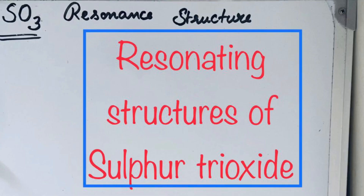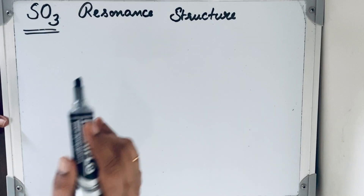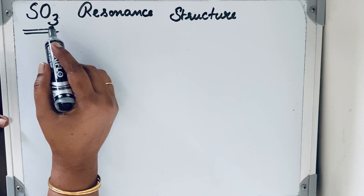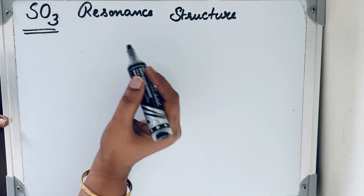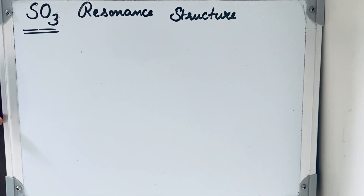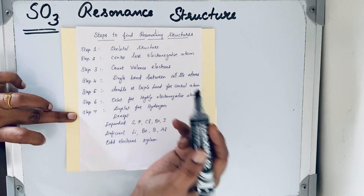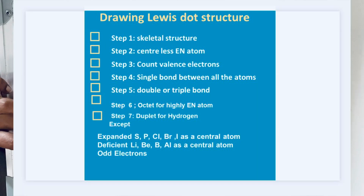Welcome to Aurora Chemistry for Everyone. Let us see how to write resonant structures for sulfur trioxide SO3 by using the given steps.